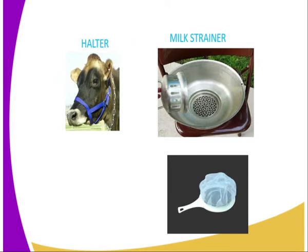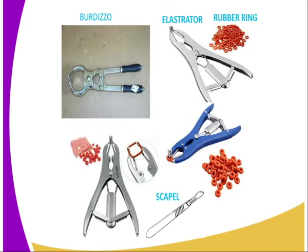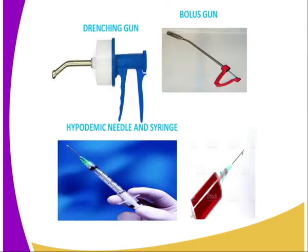We have several examples of milk strainers, as you can see in the images there. Then we have the Bedizel, the Rastrator, rubbering, and also the scape. All these equipment are used when carrying out the castration process during livestock production.